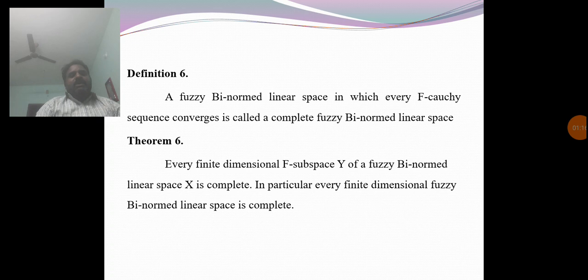Next, the theorem. Theorem 6: In particular, every finite dimensional fuzzy bi-normed linear space is complete.